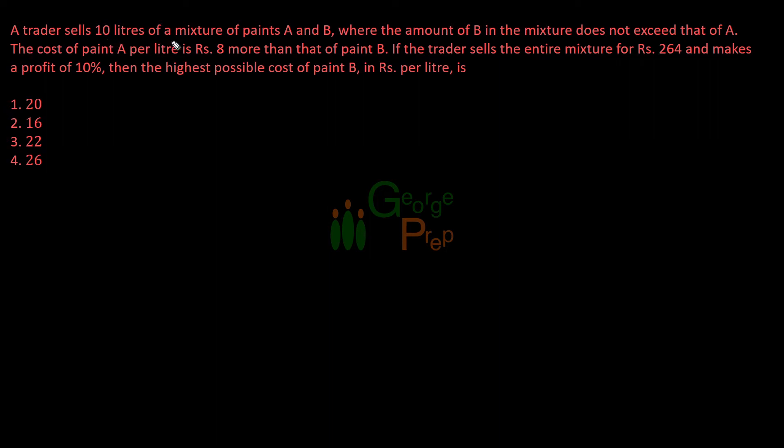A trader sells 10 liters of a mixture of paints A and B, where the amount of B in the mixture does not exceed that of A. Let me assume VB as the amount of paint B in the mixture and VA as the amount of paint A. The amount of B does not exceed that of A, so VB should be less than or equal to VA. The total mixture's quantity is 10 liters, so VA plus VB equals 10.